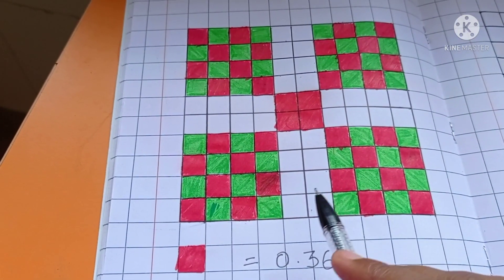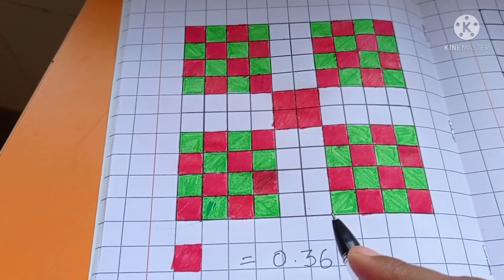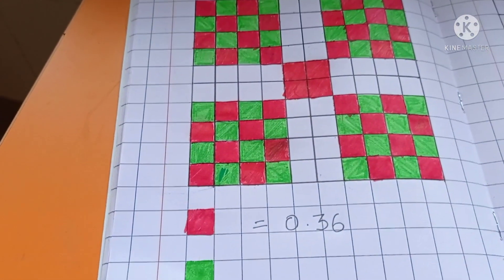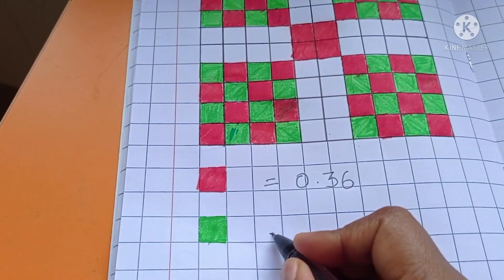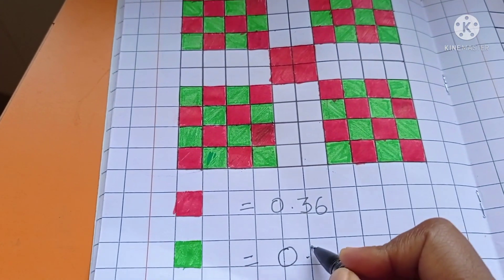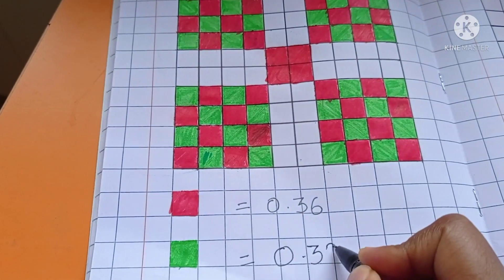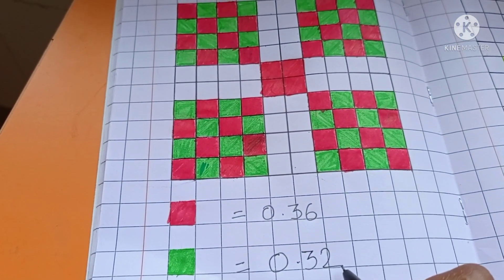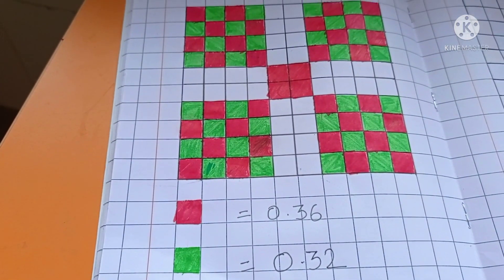So out of 100, 32 parts are shaded. How to represent in a decimal the whole part? 32, 0.32 parts are shaded in color green.